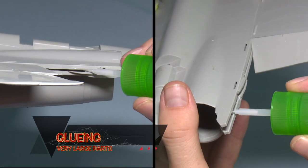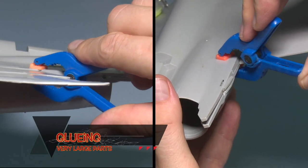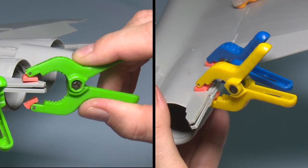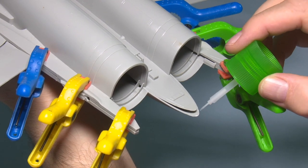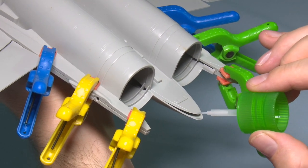When gluing very large parts, such as 1/32 scale jets, the two fuselage halves, often it's difficult to actually do it all in one hit. So one way to do it is to do it in sections, so the front section, and then the rear section.